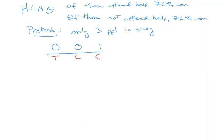Now I want to calculate the difference between the win rate among those who were offered help and the win rate among those who were not offered help. There's only one person who was offered help — that person was a T and they did not win, they had a zero. So the mean outcome for those offered help is zero. There are two people who were not offered help — their outcomes were zero and one — so the win rate is 0.5. The difference in means is negative 0.5.